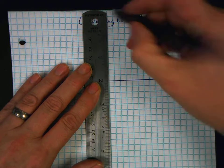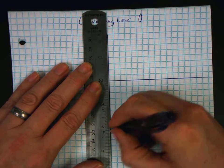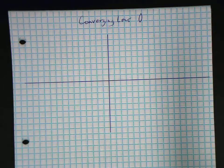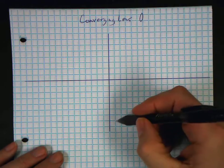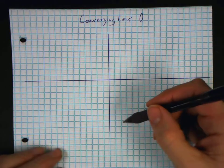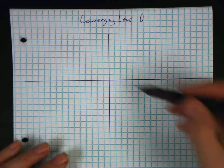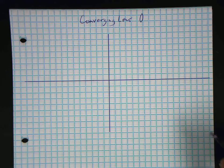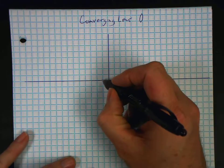Now, the nice thing about this is we can just draw a line. And we can say this is my lens, because this is governed by the thin lens equation, and it's not going to get any thinner than a line. So we're only going to manipulate it there.